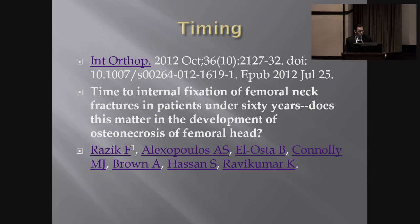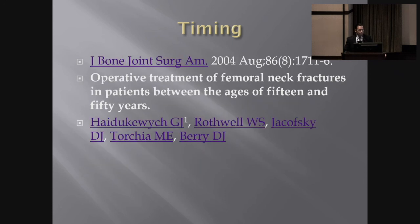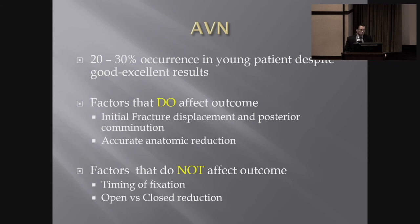Recent literature includes a study in International Orthopaedics reviewing patients under 60 — looking at the risk of osteonecrosis and whether timing and technique mattered — and a similar study from 2004. The conclusion is to minimize the risk of avascular necrosis, particularly in the younger patient, because outcomes can be significant. AVN can occur in up to 30 percent of patients even with good to excellent results — even if you get a perfect reduction, 30 percent may still develop AVN.